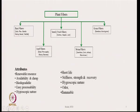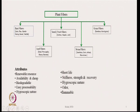Within the plant variety of fibers we have bast fibers, leaf fibers, seed fibers, grass fibers, and straw fibers. The advantages of natural fibers include that they are a renewable resource, they are generally available and cheap, they are biodegradable, processability is generally easy, and they are generally hygroscopic in nature, which can be beneficial in some cases and not so beneficial in others. They also have a short life, which can be advantageous or disadvantageous depending on the product.